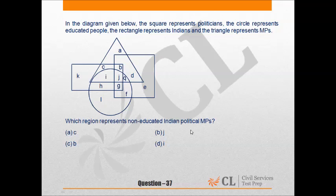Let us look at question number 37. In the diagram given below, the square represents politicians, the circle represents educated people, the rectangle represents Indians, and the triangle represents MPs. Which region represents non-educated Indian political MPs?